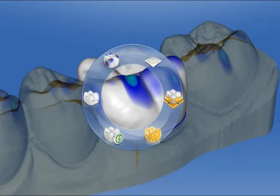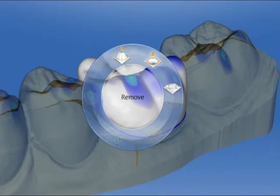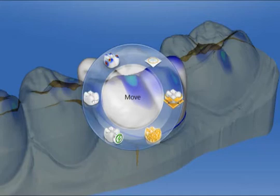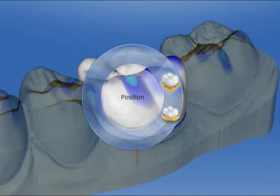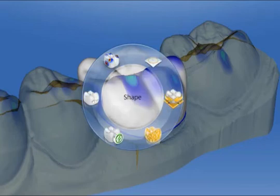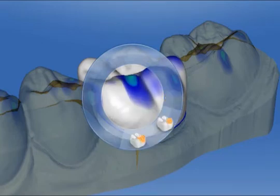On the top right is the Form tool, which removes, adds, and smooths material. Below this we have the Move tool to position and rotate. Below this is the Shape tool with circular and anatomical modification possibilities.